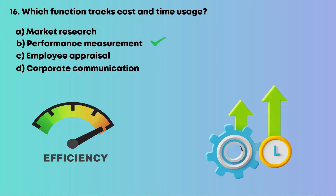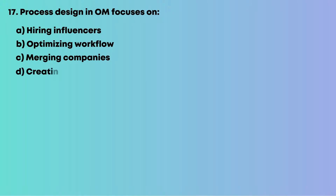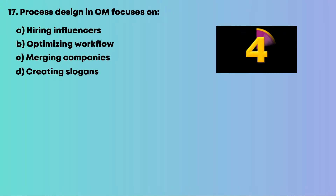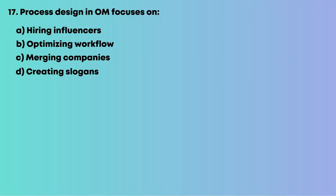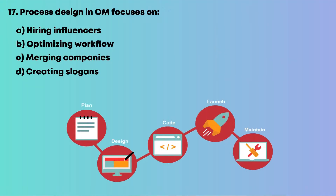Question 17: Process design in operations management focuses on: A, hiring influencers; B, optimizing workflow; C, merging companies; D, creating slogans. It ensures smooth and efficient processes. So the answer is B, optimizing workflow.